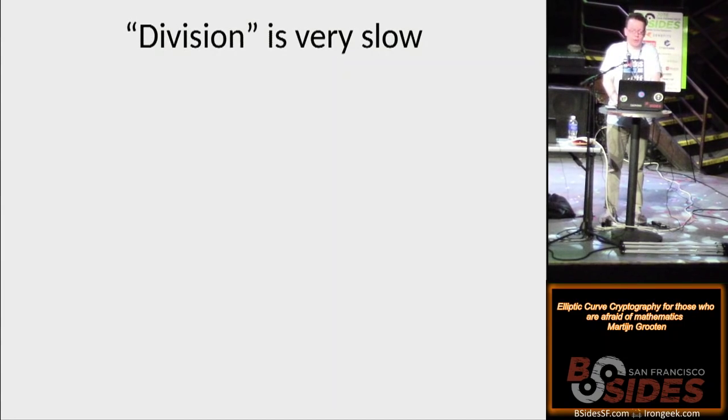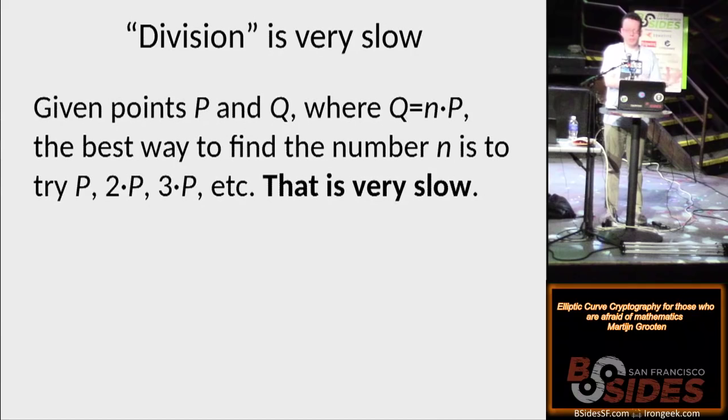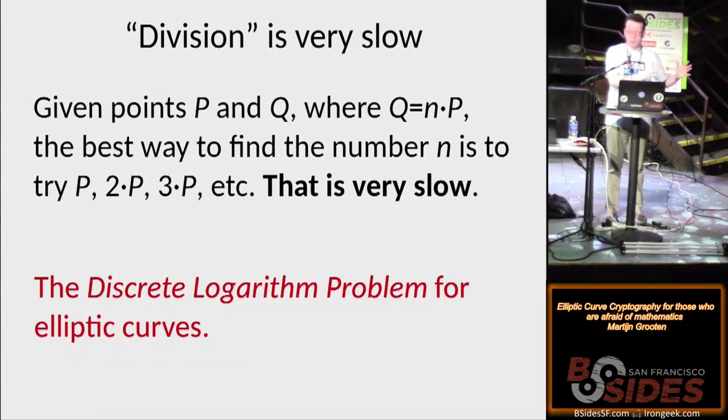On the other hand, the opposite operation is very slow. So what I mean is, if you are given two points on the same curve, p and q, and you know that q is n times p for some number n, which may be 100 or 15 quintillion, the only way to find this number n is to try if p, two times p, three times p, until you get q. This is extremely slow, and if numbers are very large then computers simply can't do this unless they've got millions of years. So this combination of multiplication being very fast and division being very slow, this is called the discrete logarithm problem for elliptic curves, and that's the basis of all elliptic curve cryptography.